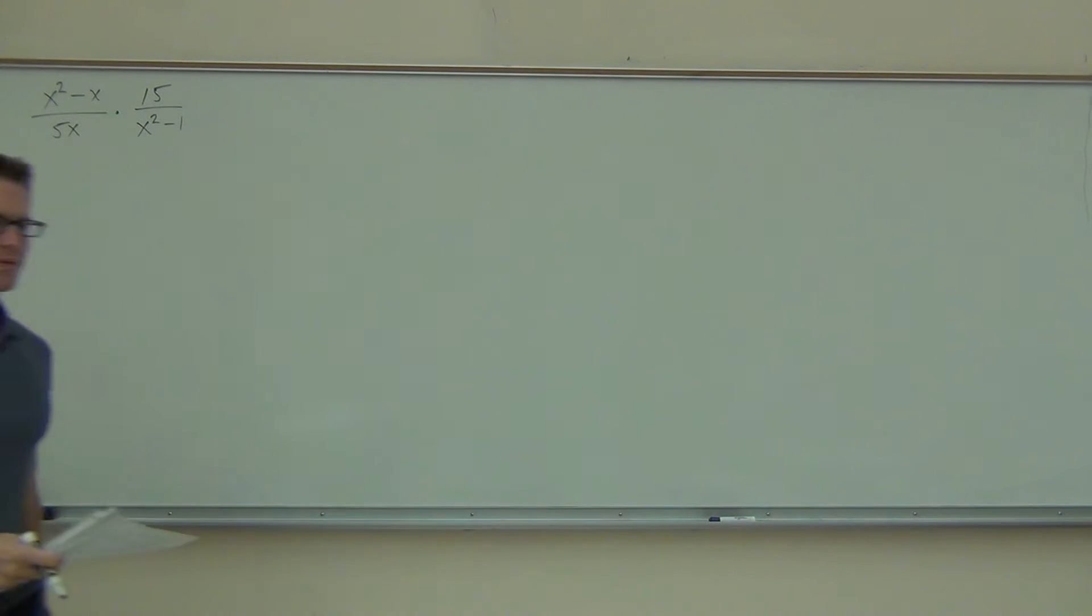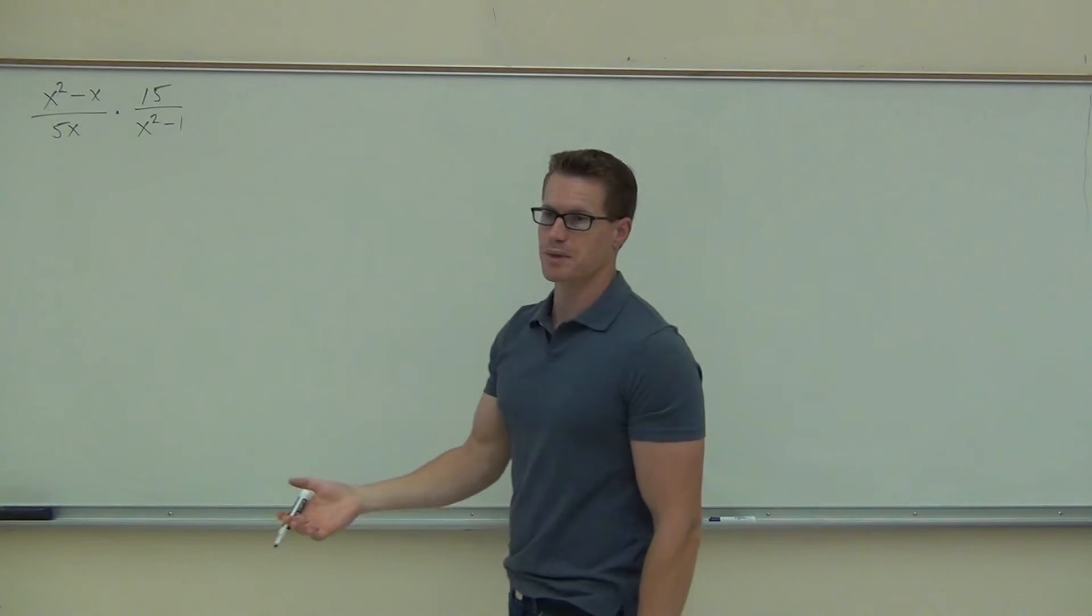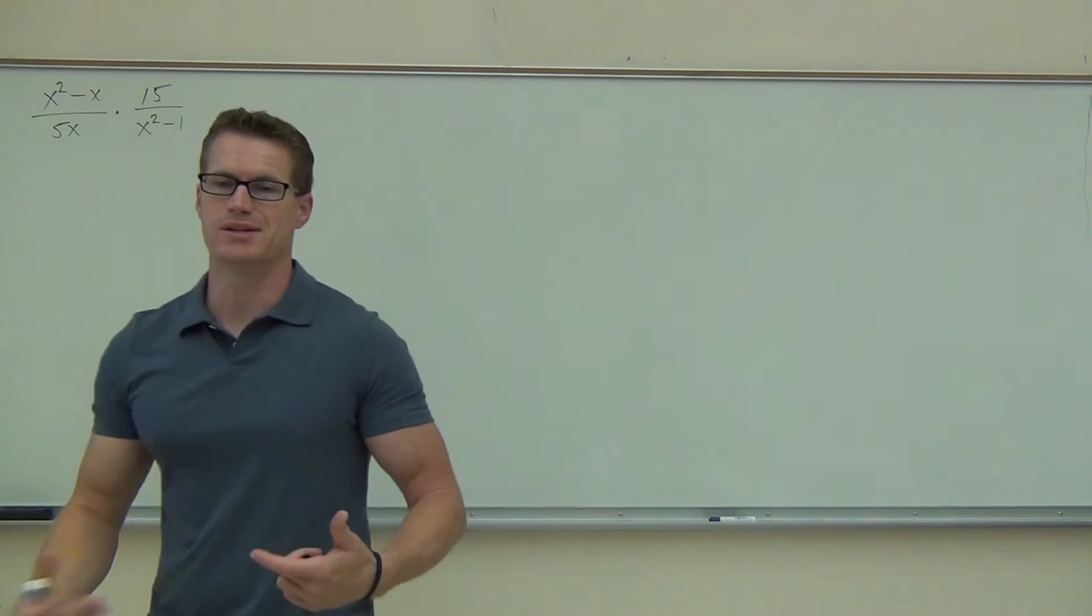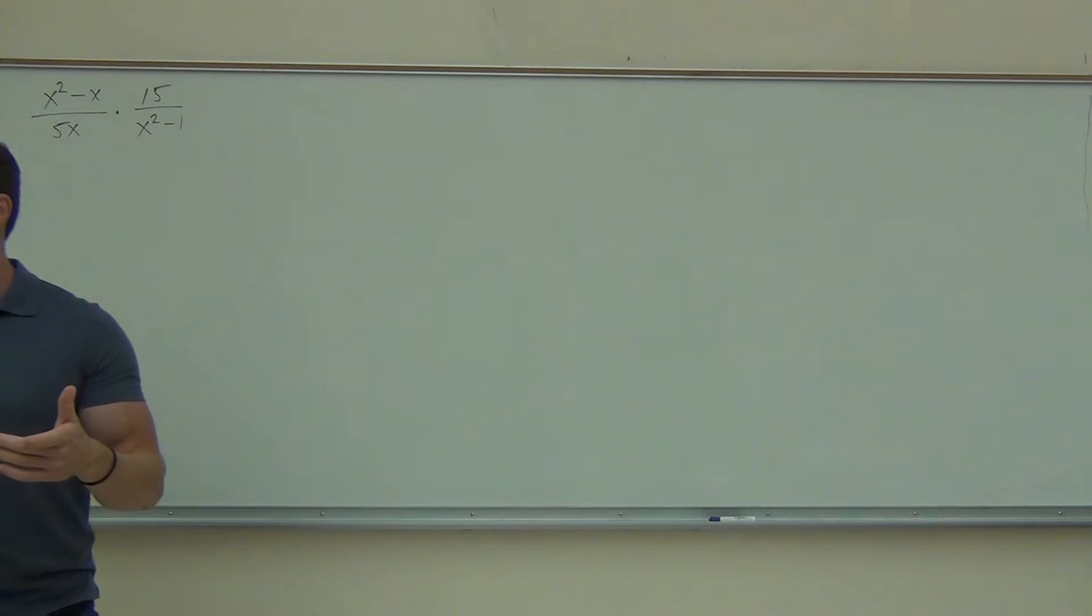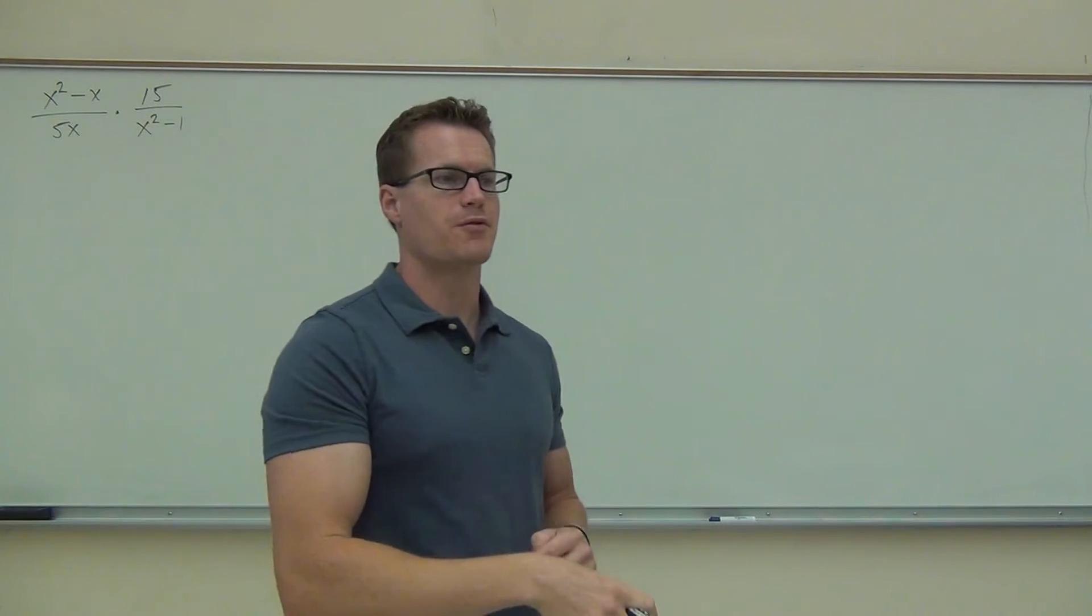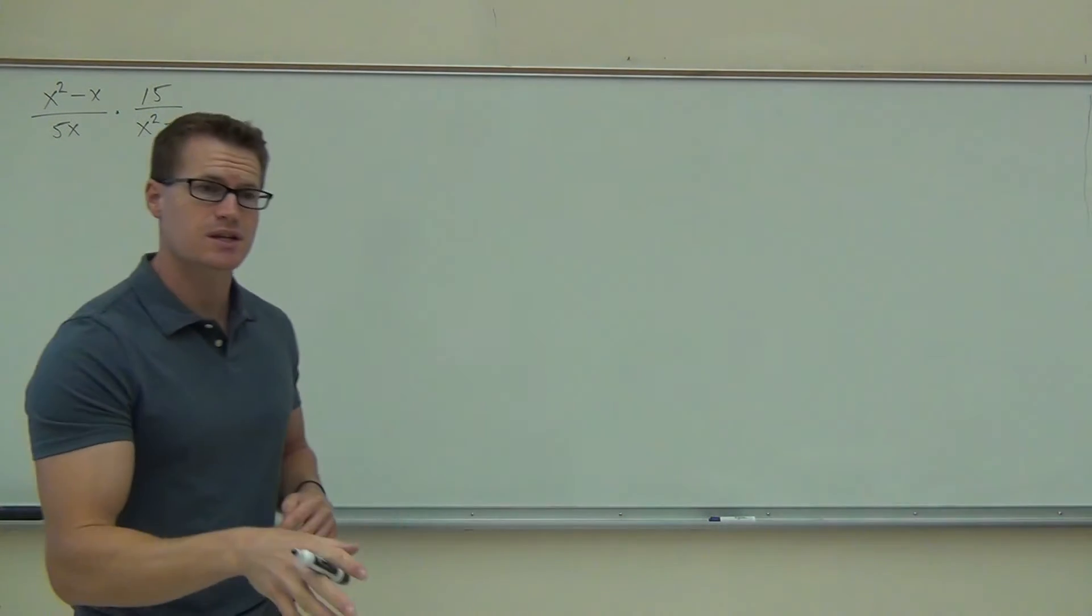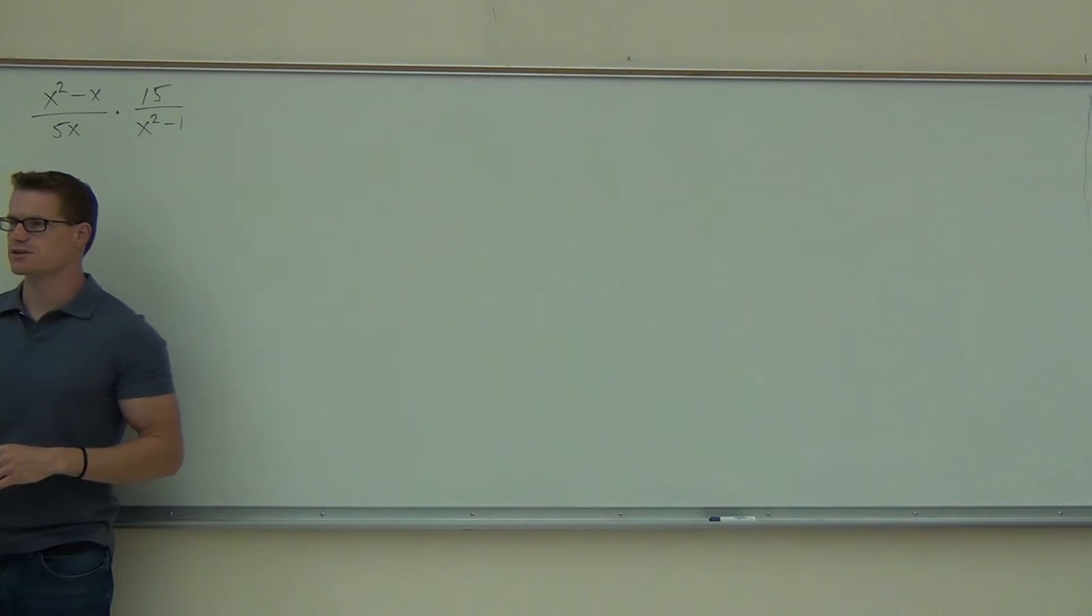The reason why is because we're going to be simplifying using common factors. So we can't do that unless we actually factor it. So let's go ahead and try it out on this next example. Now I gave you a few steps last time we're going to follow those pretty much to the letter every time we do a multiplication of rational expressions. So the very first thing we get to do is we look at this thing and we are going to factor it completely.